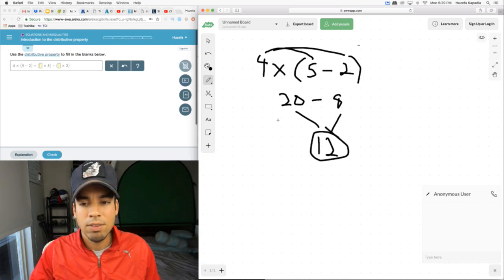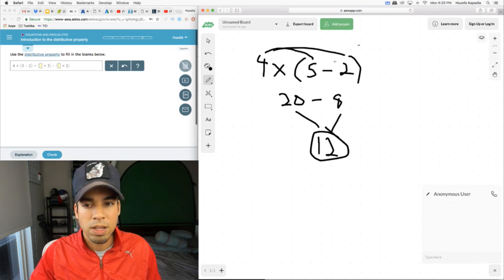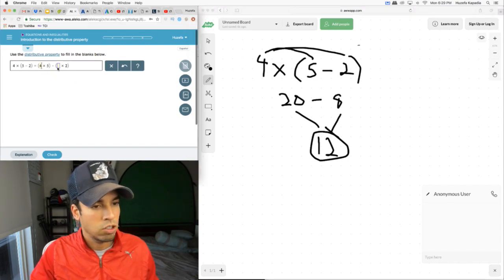That's all it's doing. It's having us carry out the distributive property. The 4 jumps and multiplies each of these numbers individually, so what goes here? Just a 4.